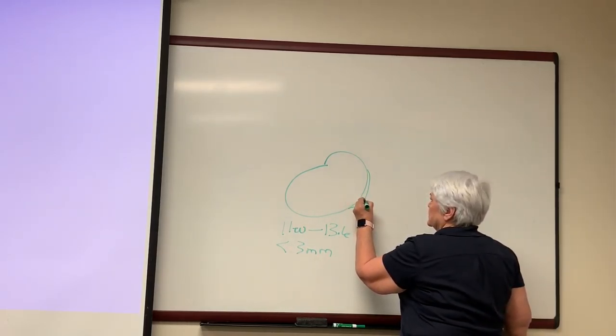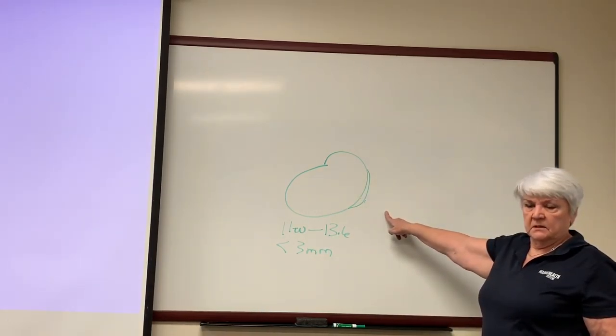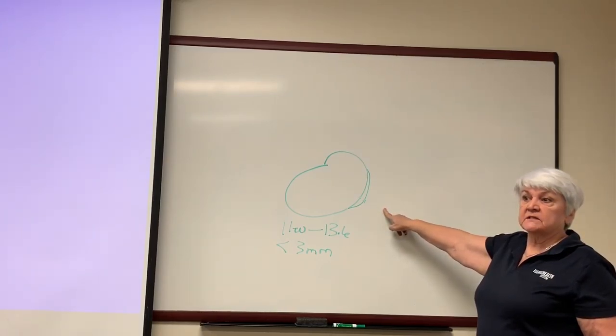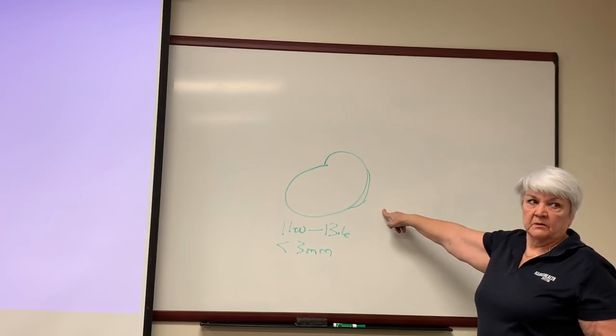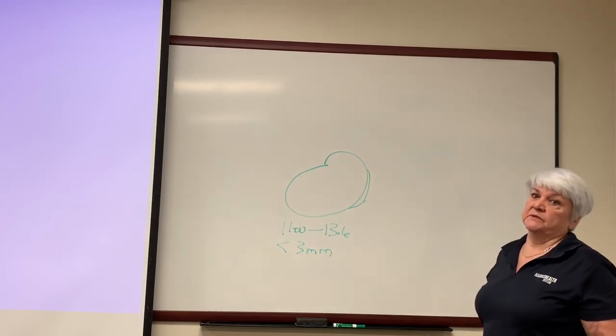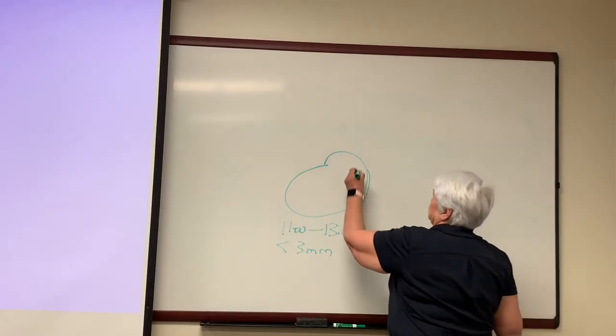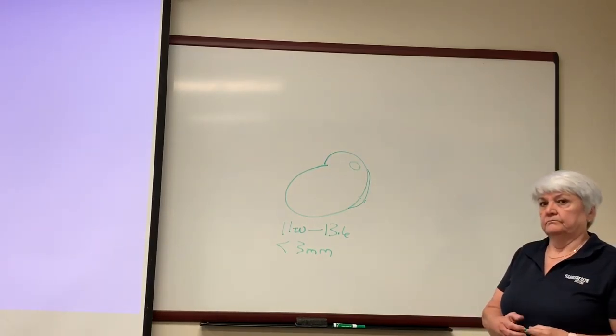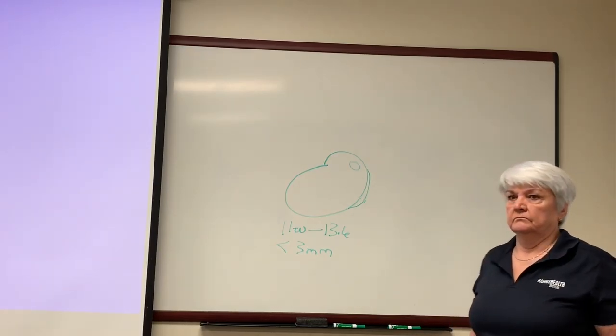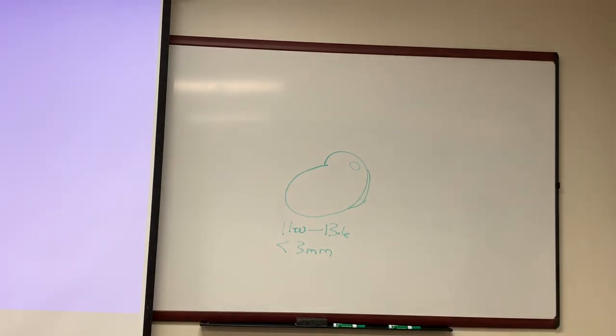You measure from here to here. That requires a license to do this. We very seldom do it and they're usually sent to maternal fetal medicine. You have to have a certain license that goes with that. Because if it's greater than 3 millimeters, that's a sonographic sign of a chromosomal abnormality. Something is wrong with the baby. It has to be precise. Less than 3 millimeters. Is that called NT measurement? Nuchal translucency.